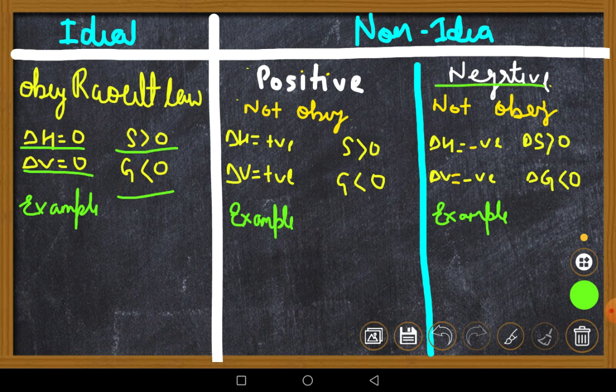Now I will tell you about the examples. First, let's talk about ideal solutions. Let's look at the examples that are famous everywhere: N-Heptane and N-Hexane, which I will write as N-Heptane and N-Hexane. What are the examples? For example, benzene plus toluene. When we come to positive and negative, what are the questions?